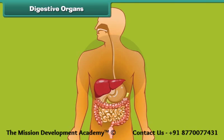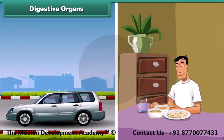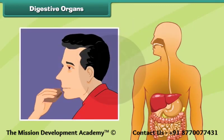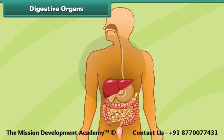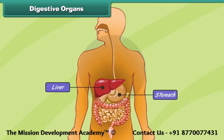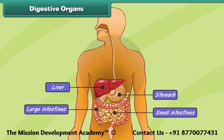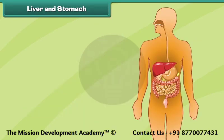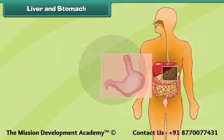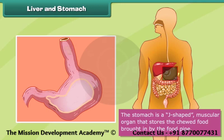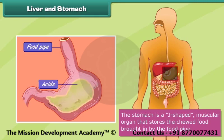Digestive organs. Like machines, the human body also requires fuel to perform work. The food that we eat every day serves as the fuel for our body. The food eaten by a human being is broken down into smaller pieces to obtain energy — this process is called digestion. Some main organs that help in digestion are the liver, stomach, and small and large intestines. The liver is a secretory organ that produces many juices that help in digesting food. The stomach is a J-shaped muscular organ that stores the chewed food brought in by the food pipe, and the food is digested in the stomach with the help of enzymes and acids present here.